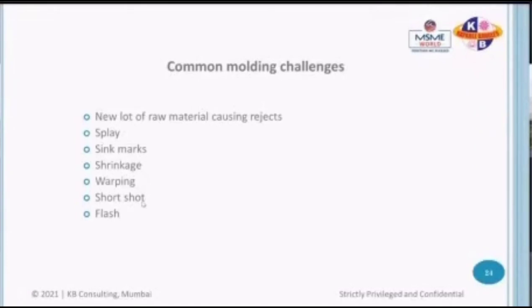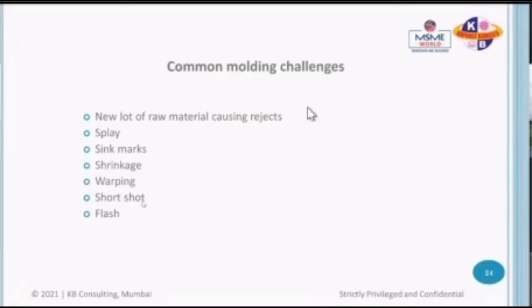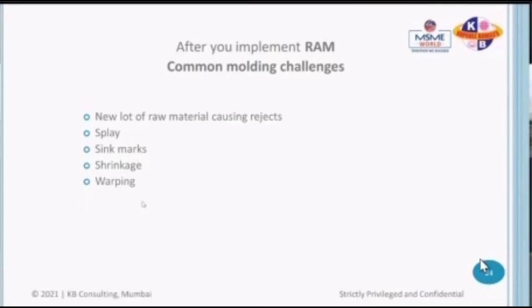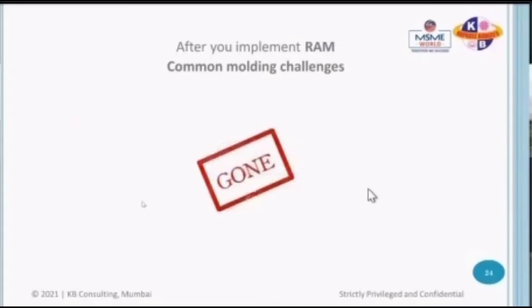Common injection molding problems include splay marks on the parts, sink marks, shrinkage, warpage — the part starts to deform in shape — short shots where a complete part is not obtained, or flash — excess plastic on the part. When you implement RAM or Real Art of Molding, flash disappears, short shots are eliminated, warping doesn't happen, shrinkage is gone, sink marks are not observed anymore, splay is not there, and new lots of raw material are no problem. All these problems disappear when you implement RAM.